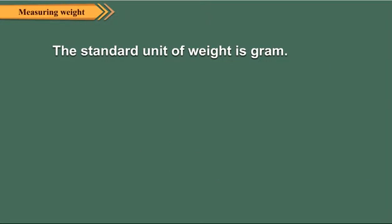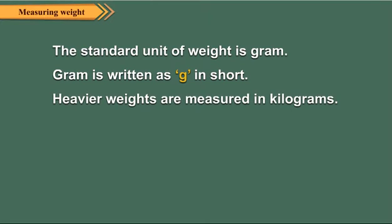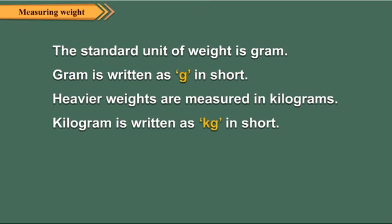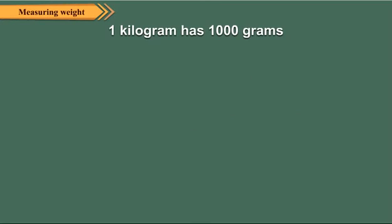The standard unit of weight is gram. Gram is written as 'g' in short. Heavier weights are measured in kilograms. Kilogram is written as 'kg' in short. One kilogram has 1000 grams.